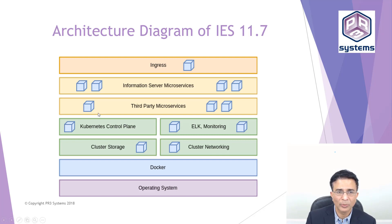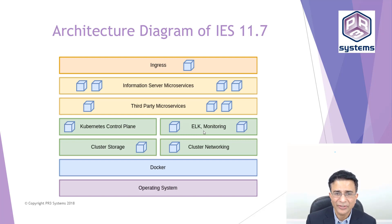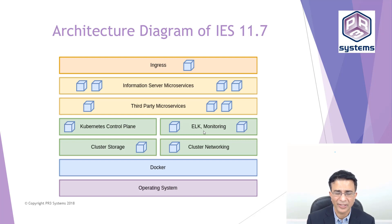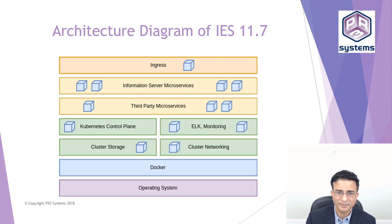At the lower level we have the Kubernetes control plane, which allows you to control all the different pods containing the containers. On the right-hand side there is monitoring. ELK stands for Elasticsearch, Logstash, and Kibana — Kibana is used for visualization, Logstash for backend processing, and Elasticsearch for search. Cluster storage manages all the storage volumes. Cluster networking handles the internal IP addresses, and Docker containers reside at the lower level on the operating system.